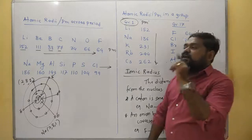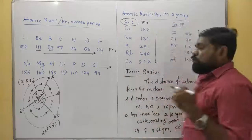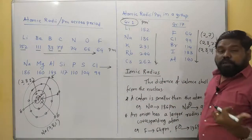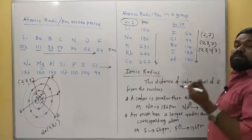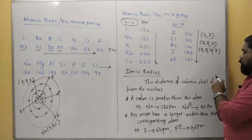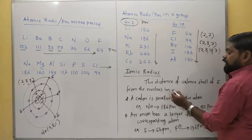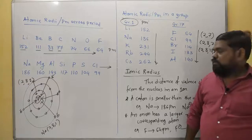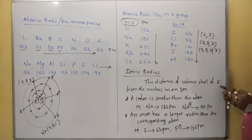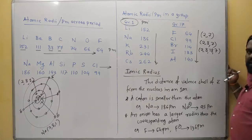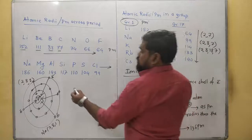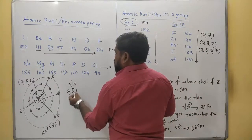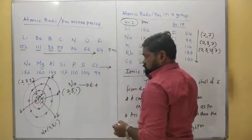Just as atomic radius has trends, so too does ionic radius. In case of an ionic compound we calculate ionic radius. The ionic radius is defined as the distance of the valence shell electrons from the nucleus in an ion. The same can be said for an atom. A cation is smaller than the atom. For example, sodium has configuration 2,8,1 — sodium will lose one electron.